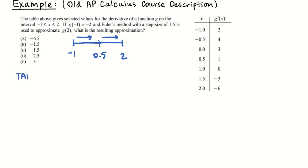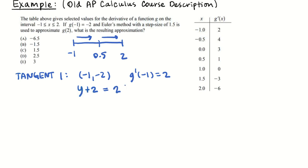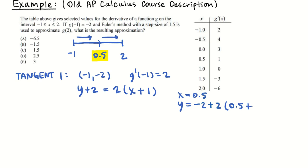So I'm going to write down my first tangent line. My point is (−1, −2) and my slope from the table is positive 2. My equation is y minus (−2) equals 2 times (x minus (−1)). I plug in x equals 0.5: y equals negative 2 plus 2 times (0.5 plus 1). The step size is 1.5, so 2 times 1.5 is 3, and negative 2 plus 3 equals positive 1.